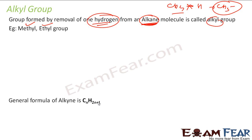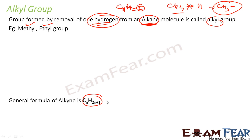The general formula of the alkyl group is CnH2n+1. This is because for alkane the formula is CnH2n+2, and from this you remove one hydrogen, so it becomes 2n+1 instead of 2n+2.